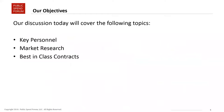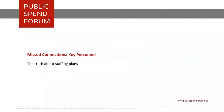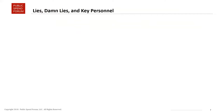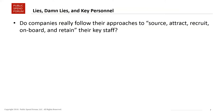Basically what we want to do is talk about three key areas where the most gap and lack of understanding exists between both sides. Those three topics are key personnel, market research, and best-in-class contracts. We're going to start with key personnel. My first question for our panel is: do companies really follow the approaches they describe in their management sections and staffing plans? And if so, how do they do it?